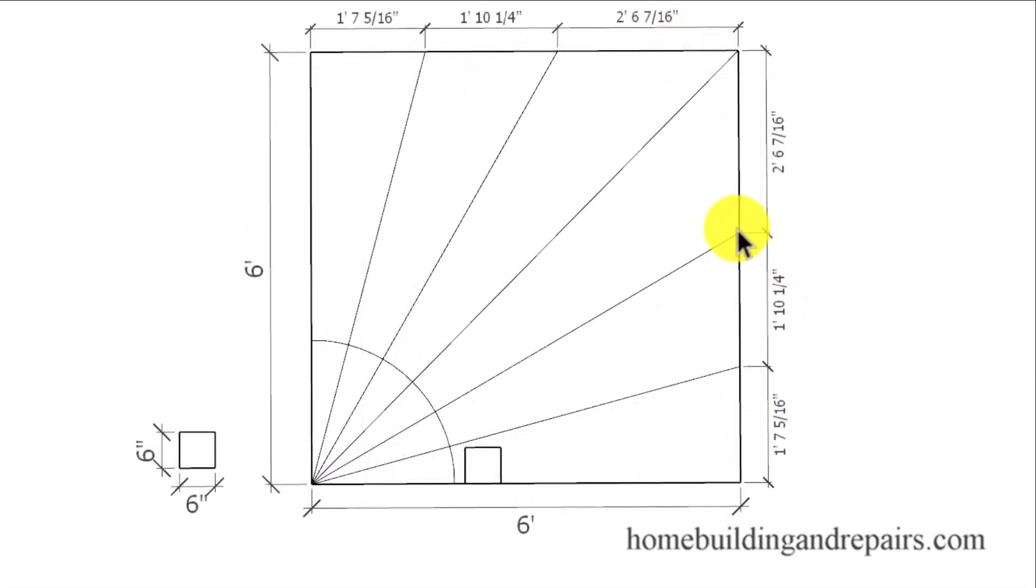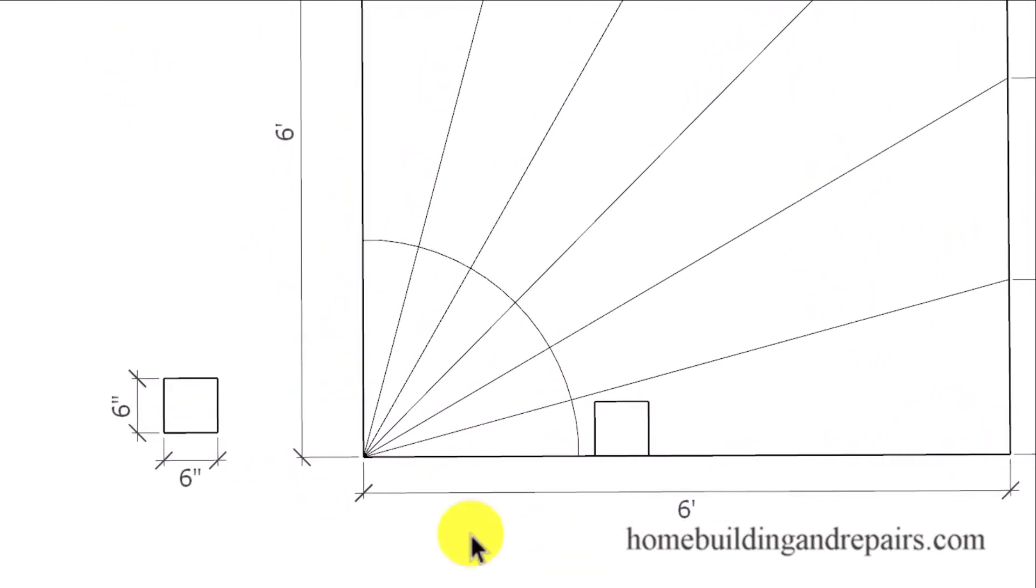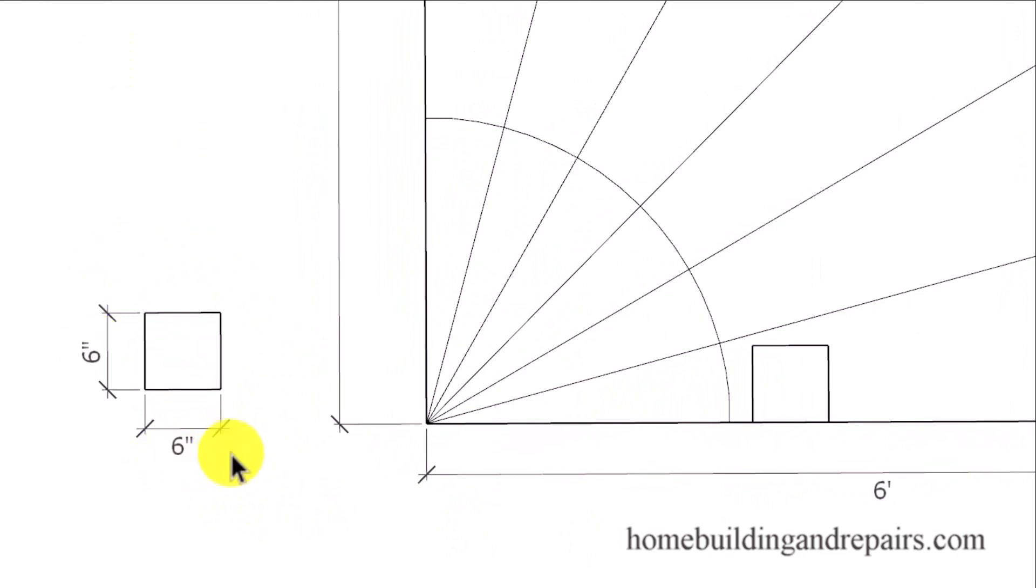After you have laid out these measurements, you can connect the straight lines from those measurements back to the center or corner of our square box. Then we are going to take a six inch square. You can just do this with a framing square. You don't need to make a separate square for this.